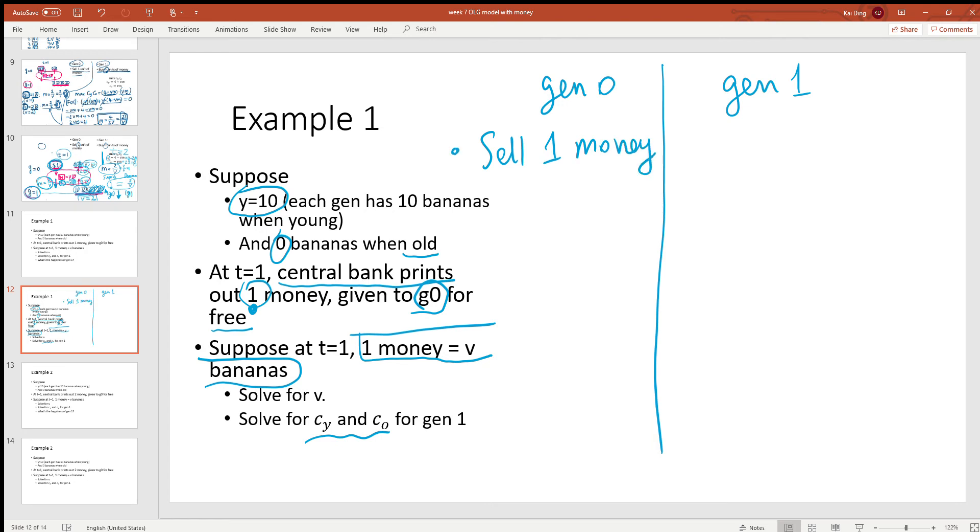At the same time, if you look at generation one, they can decide how many money they want from the market. Let's assume they buy m money from the market. Because the price of money is one money equal to v bananas, to buy m money they have to pay vm bananas.